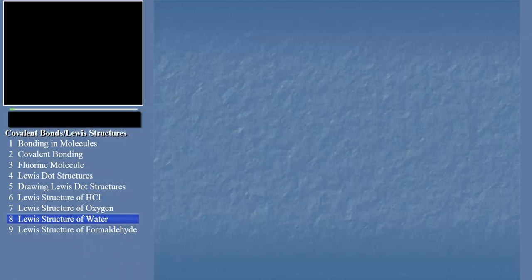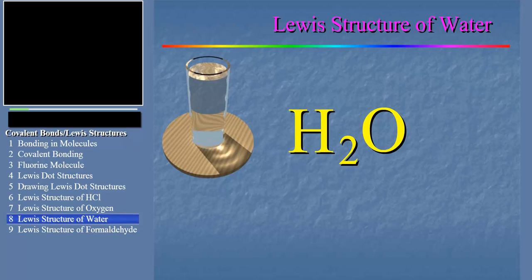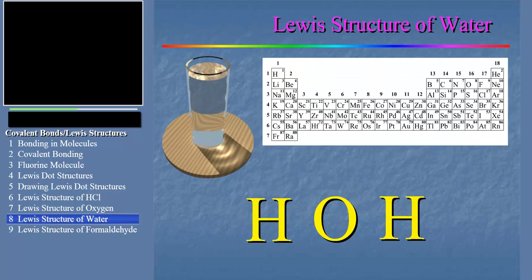As another example, why don't we do the Lewis dot structure of water? Everybody knows the formula for water, right? What you might not know is how the atoms connect together to form the water molecule. Here we introduce a general assumption you can make when doing Lewis dot structures, and you're given a formula like this. Unless told otherwise, we assume that the single atom sits at the center with the others bonded to it. In the case of water, we assume oxygen is at the center with each hydrogen bonded to it. The rest is the same old routine. Why don't you hit pause, try it yourself, then see if you got the right answer.